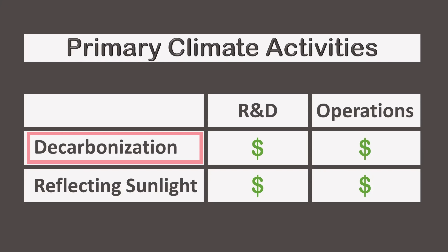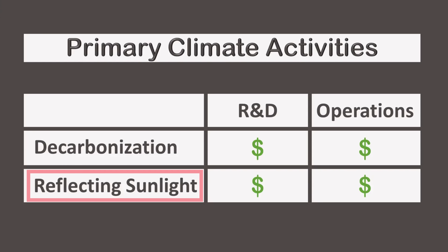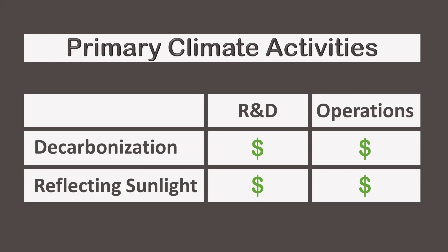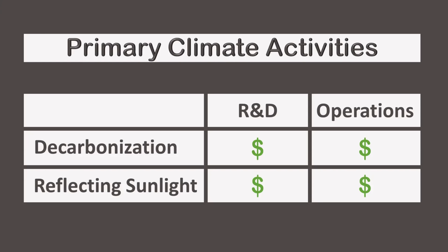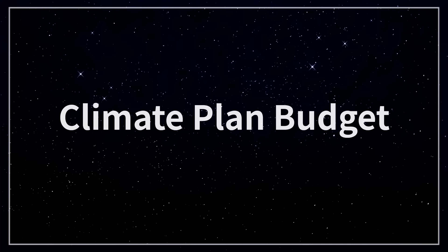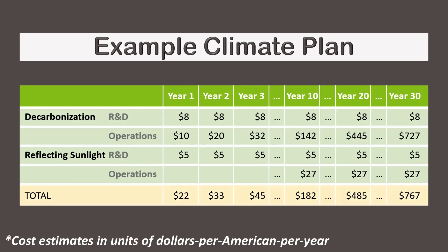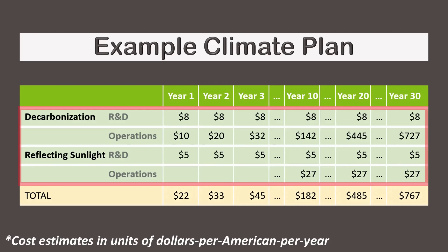One is decarbonization and the other is reflecting sunlight back into outer space. Each of these efforts primarily involves two areas: one is R&D and the other is operations. So when talking about costs, we're looking at four categories. These categories can be laid out in a four-row budget table, an example of which is displayed here.